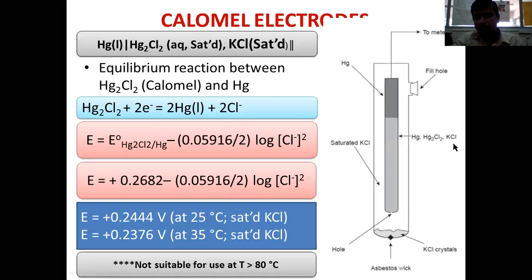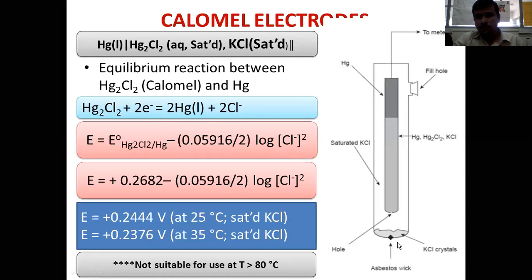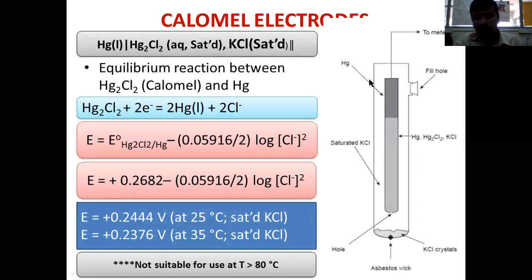In the internal tube, you fill mercury, mercurous chloride, and saturated KCl. The lower portion contains mercury, mercurous chloride, and KCl, while the upper portion contains elemental mercury. Mercury acts as the metal electrode and is connected to the potentiometer by means of an aluminium or platinum wire. There is a frit made of asbestos that acts as a salt bridge, providing interconnection between the external solution and the solution inside the electrode.